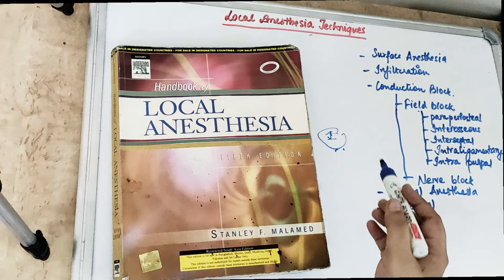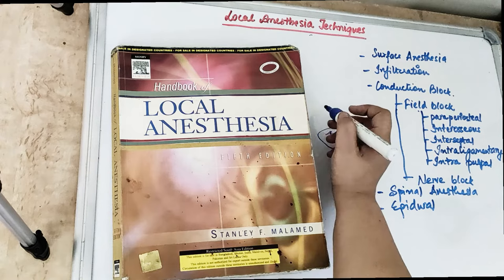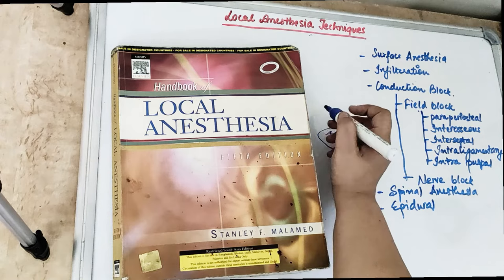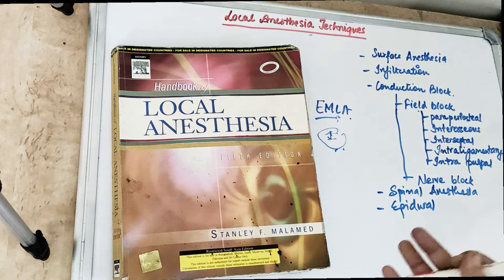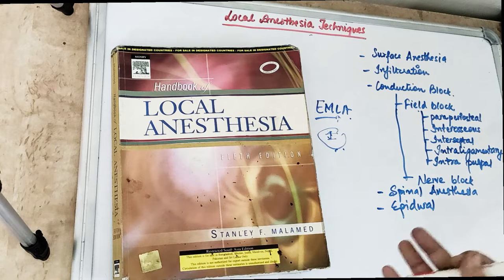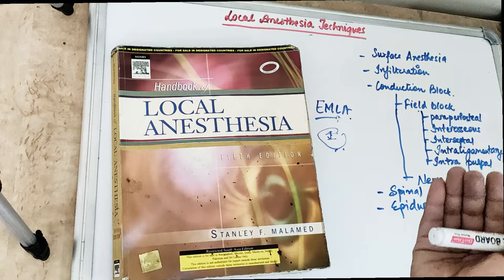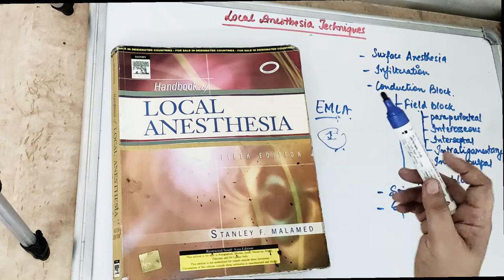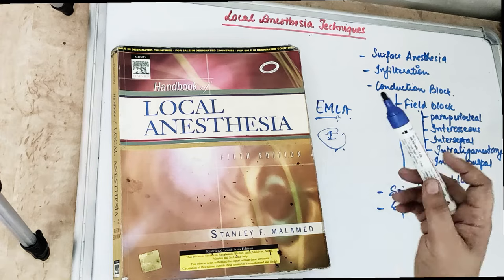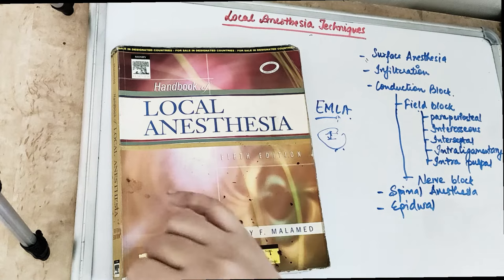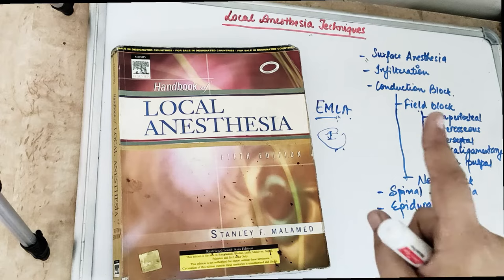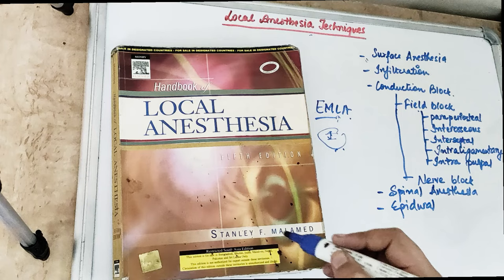Surface anesthesia includes soluble and insoluble forms covered in the classification. There is no motor function loss — only the superficial layer is anesthetized, used in abraded skin. The EMLA, the eutectic mixture of local anesthesia, is also a type of surface anesthesia. All the oral gels are surface anesthetics acting on the mucous membrane. Surface anesthesia is also used on the skin for suturing, in the anal area for piles, and in eye surgery such as cataract surgery.